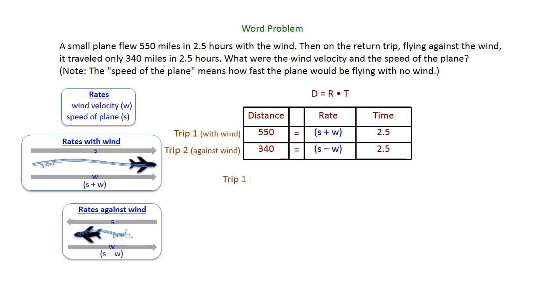Now you will just write the two equations. So let's look at that first trip with the wind. If we multiply the time and the rate together, you can get 2.5 with the parentheses S plus W equals the distance of 550. The second trip, 2.5 times S minus W against the wind equals 340 miles.